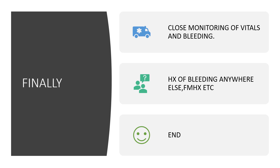We cannot draw the curtain without taking a complete and full history — and of course, also history of bleeding anywhere else in the body, and family history. For example, if this is bleeding dyscrasia and you are thinking of von Willebrand disease, we need family history. And with that, I've come to the end of this presentation. Remember to share and subscribe or leave comments. I appreciate it.